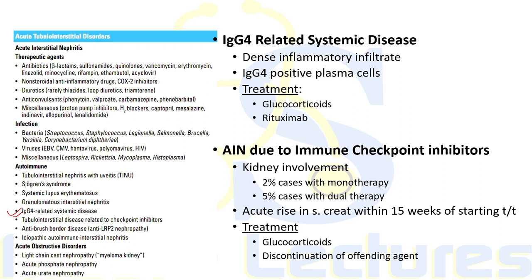IgG4-related systemic disease involving the renal system is characterized by dense inflammatory infiltrate containing IgG4-positive plasma cells, leading to tubular interstitial nephritis. Associated conditions include autoimmune pancreatitis (AIP type 1), sclerosing cholangitis, retroperitoneal fibrosis, and Riedel's thyroiditis. Typically, fibrotic lesions form pseudo-tumors. Treatment starts with glucocorticoids; for steroid-resistant cases, rituximab (anti-CD20 monoclonal antibody) can be given.